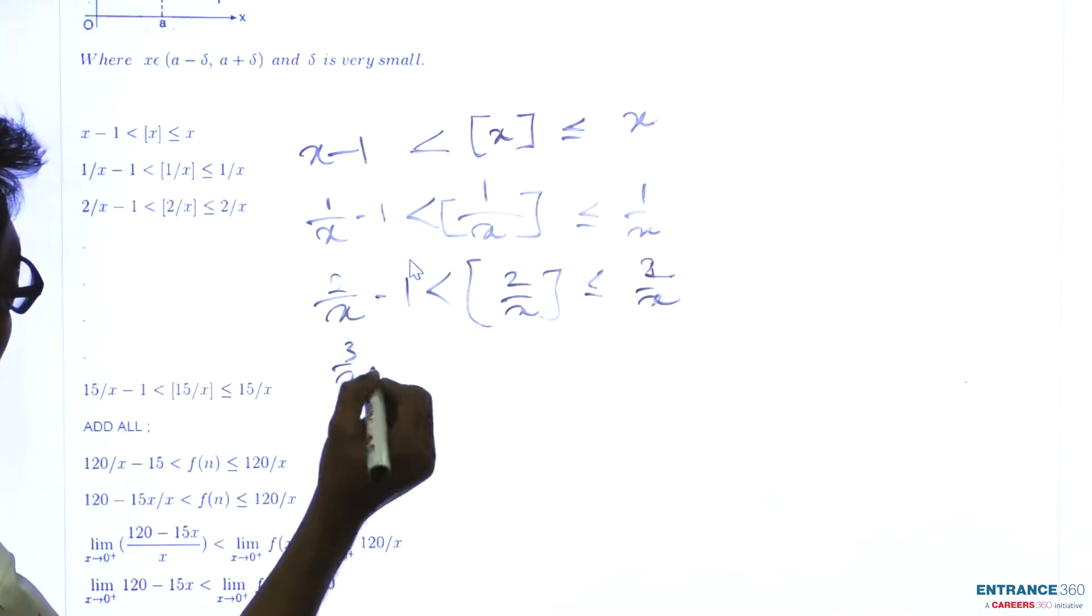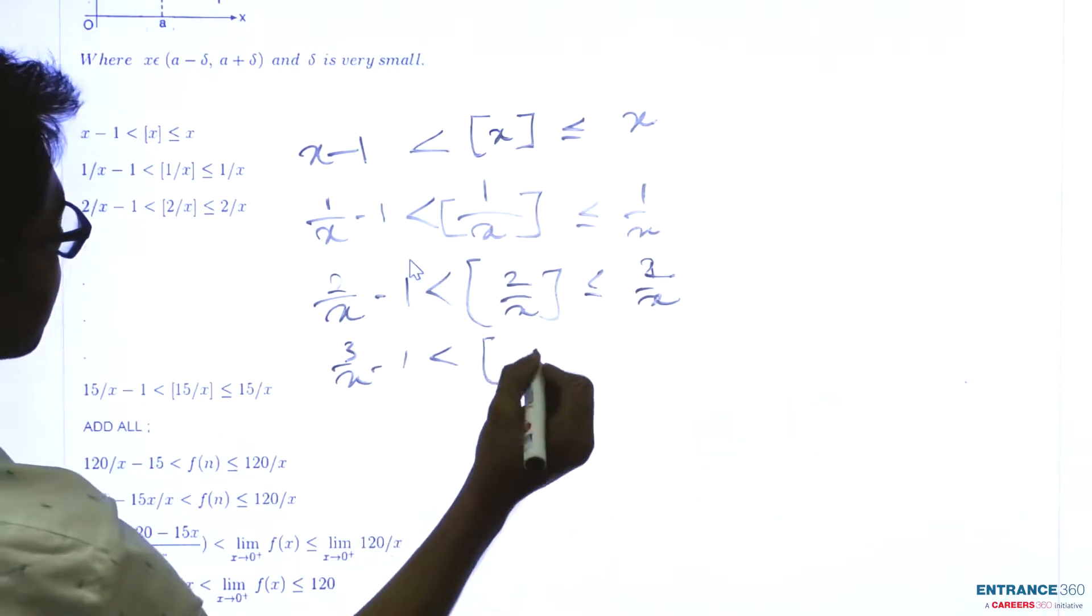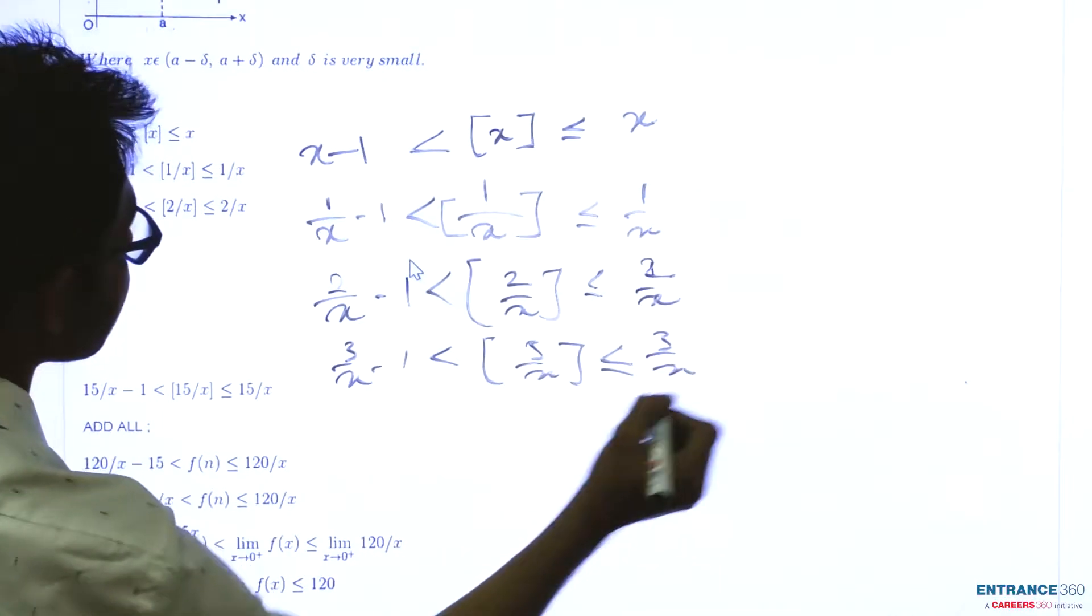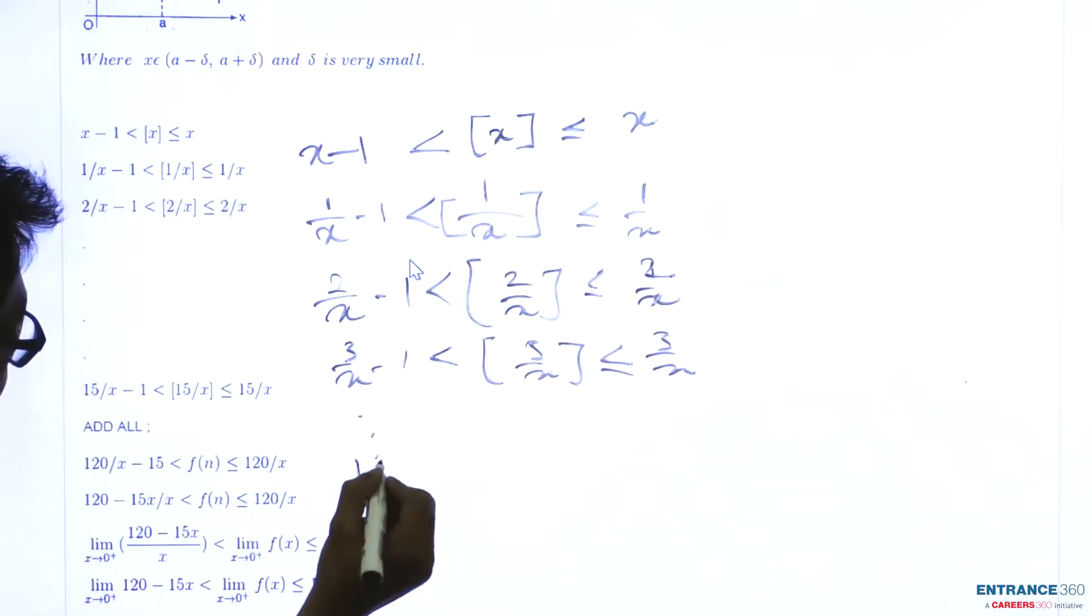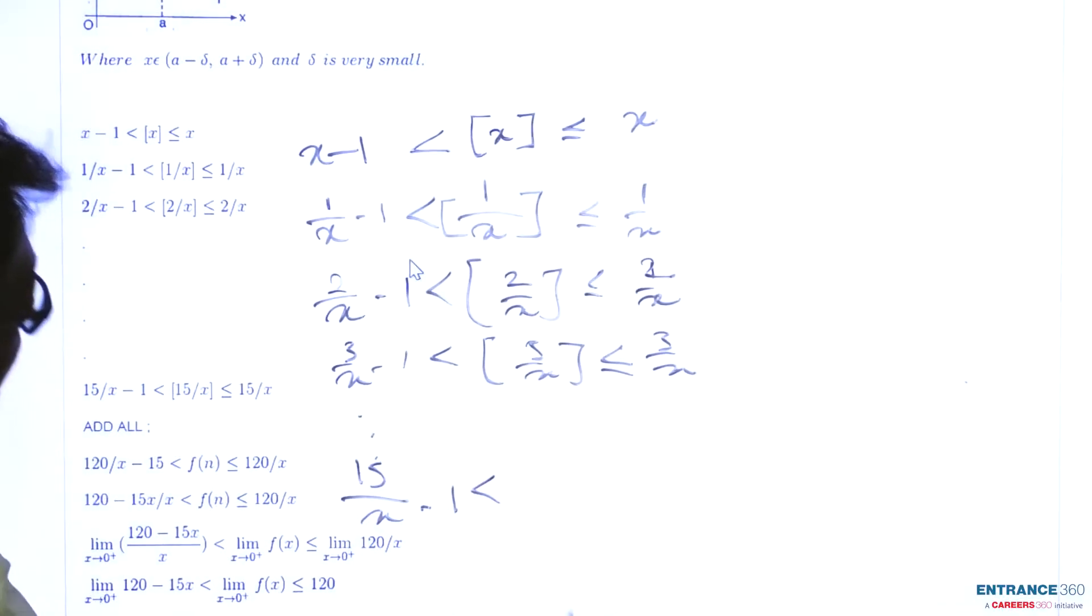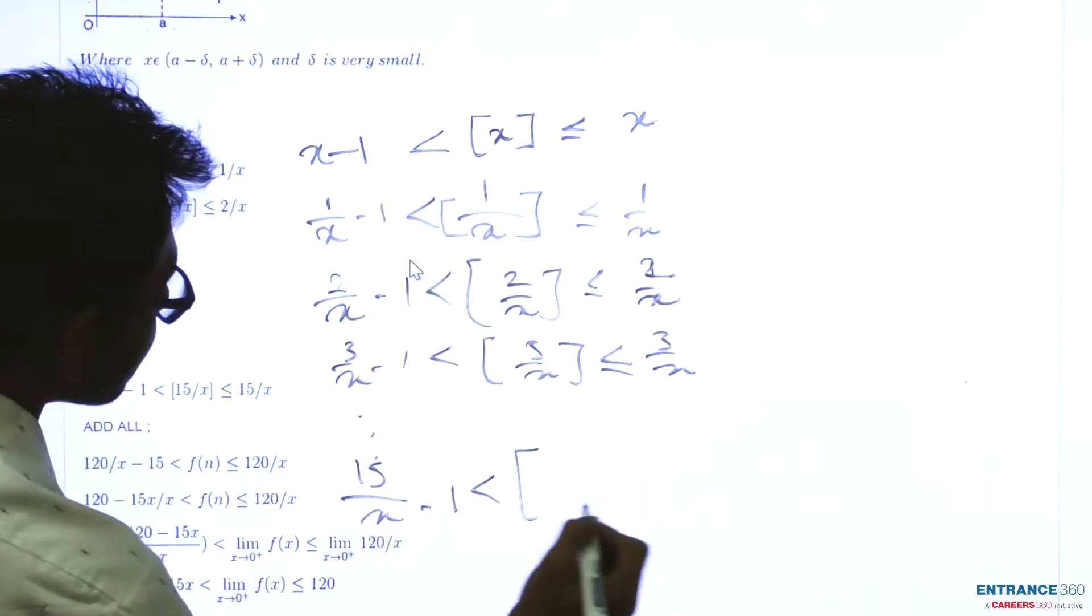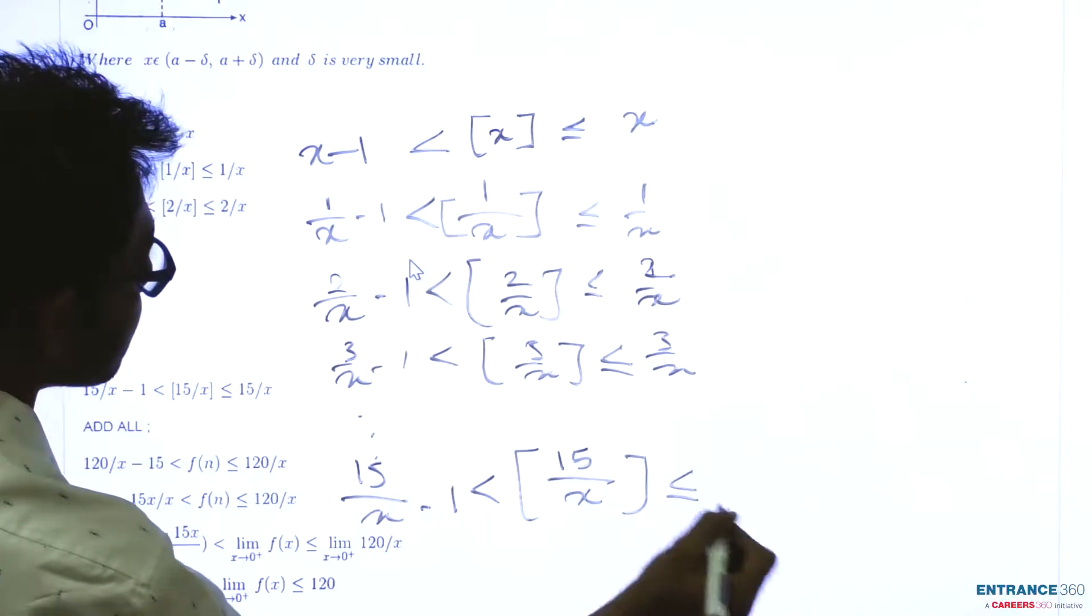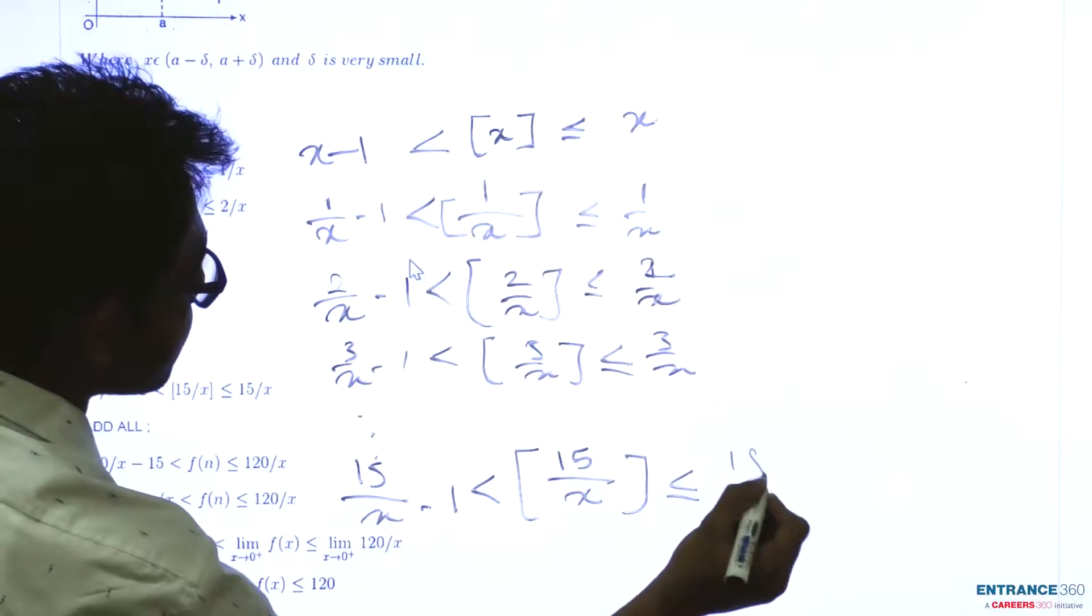Similarly, it will be 3/x minus 1 less than [3/x] less than or equal to 3/x, up to the last term: 15/x minus 1 less than or equal to the greatest integer function of 15/x, which is less than or equal to 15/x.